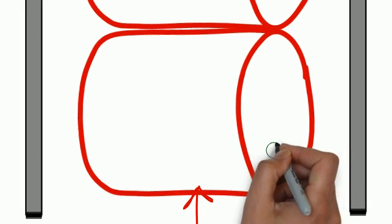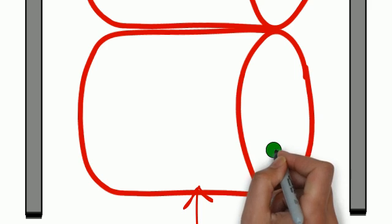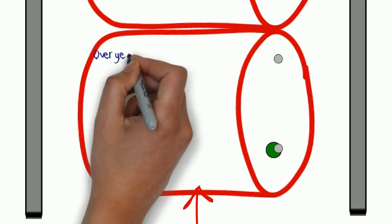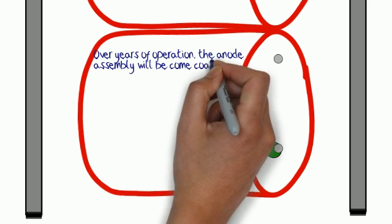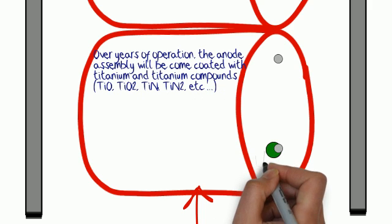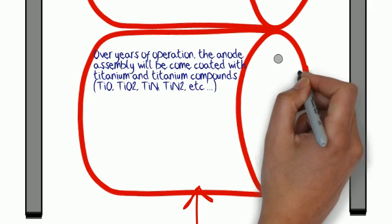And over time, enough molecules are going to sputter onto that titanium that you will actually have a buildup of those titanium compounds and titanium directly all over the walls of those anode tubes.